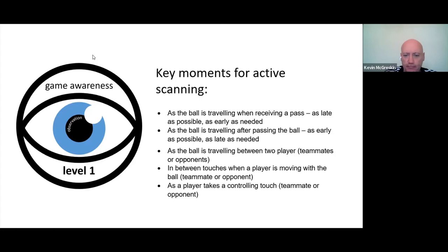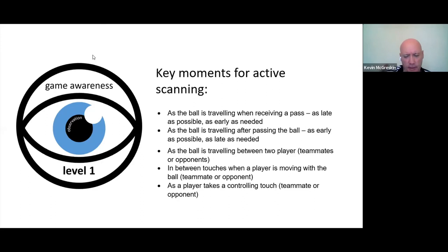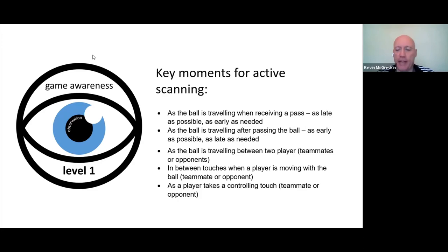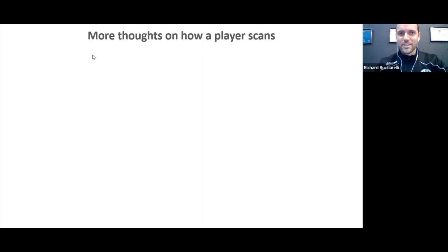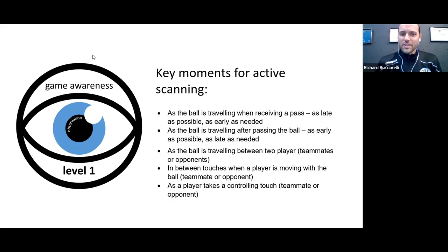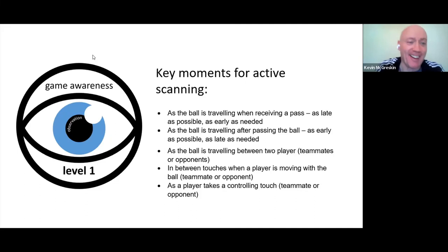When dribbling in close control, the touch frequency makes it harder to scan between every touch. The more advanced scenario is when a teammate is taking a controlling touch — if you know your teammates well enough to read that a second touch pass is coming, there's an extra opportunity to scan. Richard notes that taken together, these moments suggest players should be scanning almost continuously throughout a game.